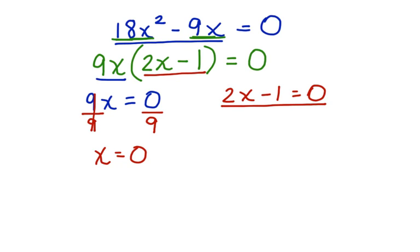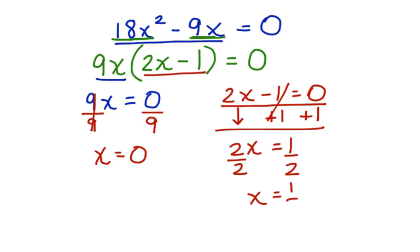Now over here, we're going to add 1 to both sides. These cancel. Bring down the 2x. 2x equals 1. Divide both sides by 2. I have x is equal to 1 half. Here are the two possible solutions for this polynomial equation.